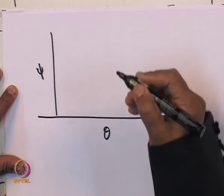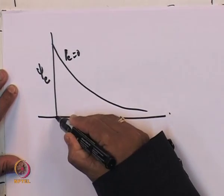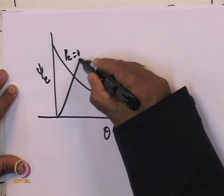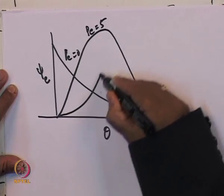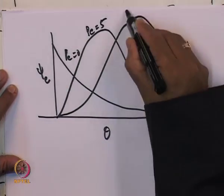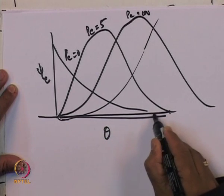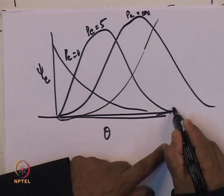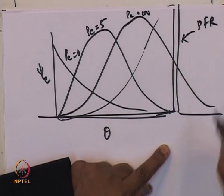If you have this equation with its boundary conditions and solve it, you get behavior for different values of Peclet number. For Pe = 0 you have a CSTR; for Pe = 5 you see some lag; for Pe = 100 the curve sharpens further; and for Pe approaching infinity you see plug flow behavior.